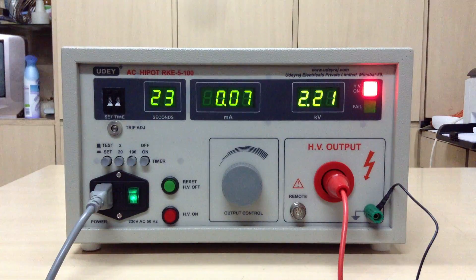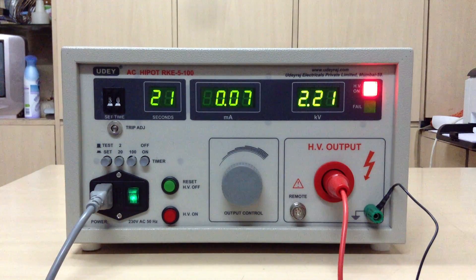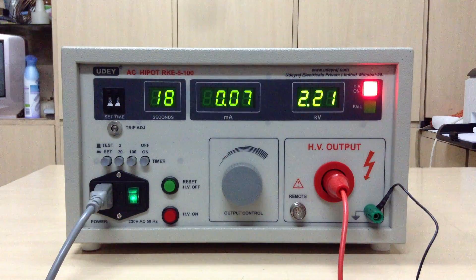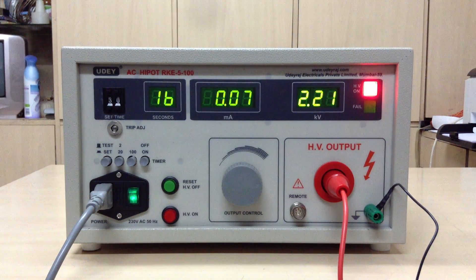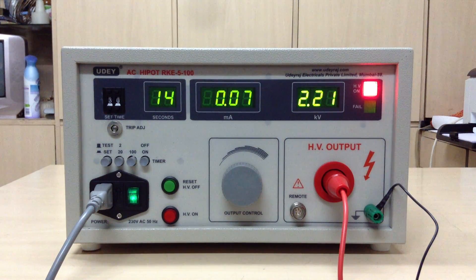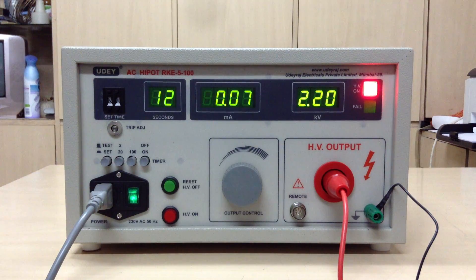You can see the leakage current on the display and it is a very compact and simple unit. Here you can see the HV ON indication coming and the seconds is counting there, and you can see the kV, mA, and seconds - everything.